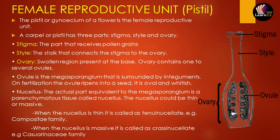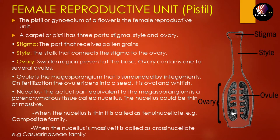Let us start from the topmost part, which is known as stigma — it is the part that receives the pollen grains from the anthers of the male reproductive unit. The second is style, which is a connection link between stigma and the ovary. The ovary is a swollen region present at the base and contains one to several ovules depending on the type of flower. As anther contains microspores, the ovule will contain megasporangium, which is surrounded by integuments, and will fertilize the ovule and then ripen into a seed. It also contains the nucellus, which is the actual part equivalent to megasporangium.